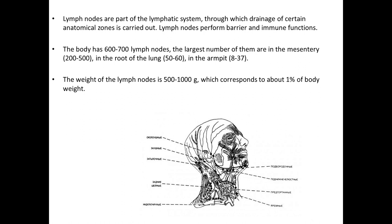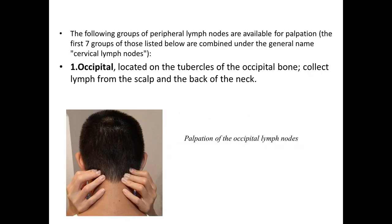Next will be examination of peripheral lymph nodes. Lymph nodes are part of the lymphatic system through which drainage of certain anatomical zones is carried out. Lymph nodes perform barrier and immune functions. The body has from 600 to 700 lymph nodes, and the largest number of them are in the mesentery, in the root of the lung, and in the armpit. The weight of lymph nodes is from 500 g to 1 kg, corresponding to about 1% of body weight.